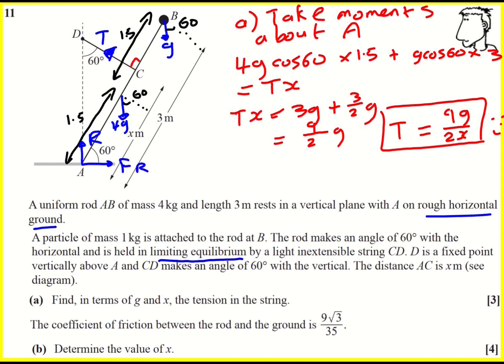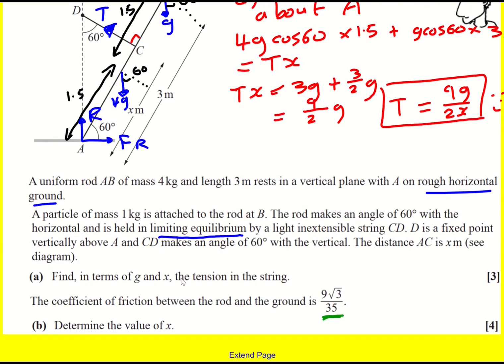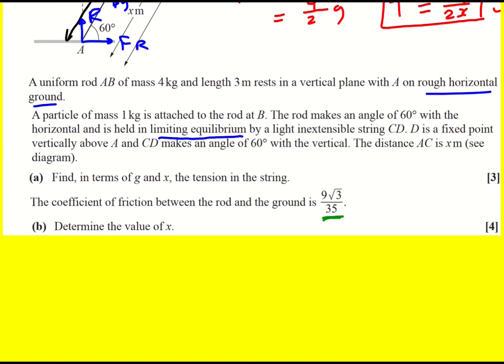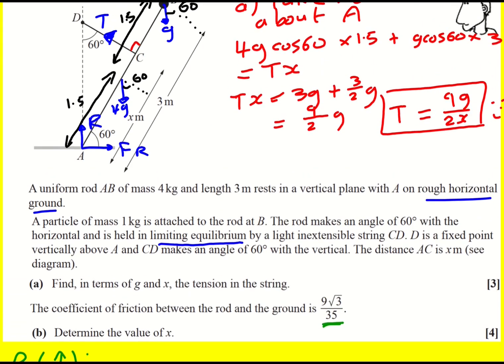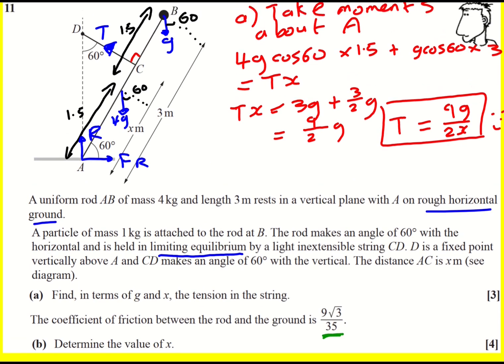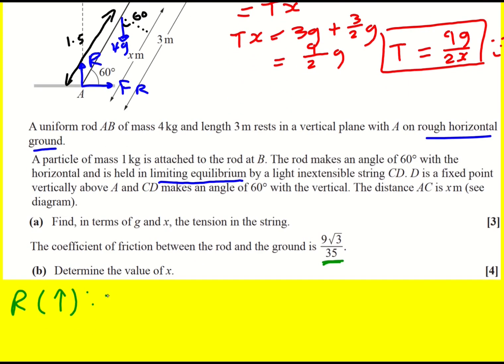I'm now told that the coefficient of friction between the rod and the ground is this, and my assets are in the value of x. So I've done the moments bit. I'm not going to need to take any more moments. It's all about the forces now. I'm going to resolve forces vertically. Because all my forces, apart from T, are acting up or horizontally, vertically or horizontally.